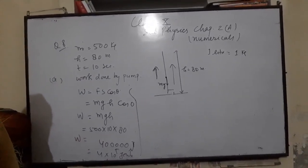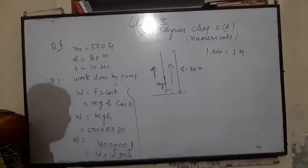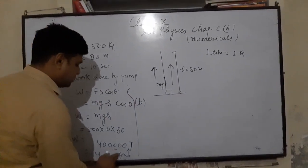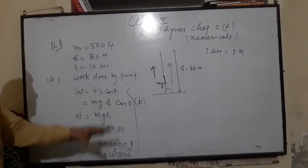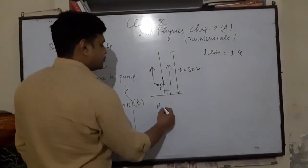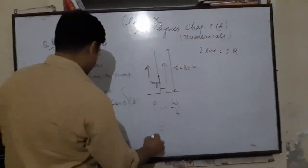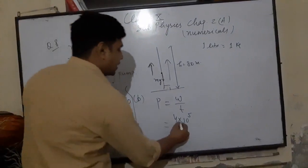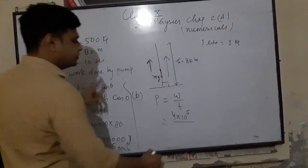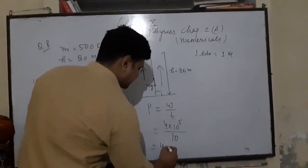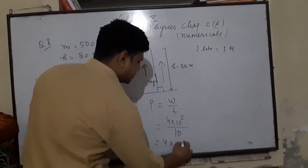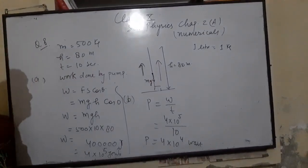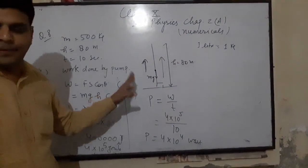In part B, find the power at which the pump worked. Power P = W/T = (4 × 10⁵) / 10 = 4 × 10⁴ W. This is the power at which the pump worked.